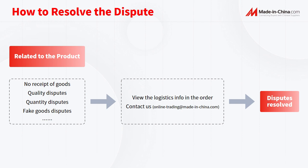If you haven't received your order, start by viewing the logistics info provided in the order. Reach out to the supplier to inquire about the delivery status — they should respond promptly. If not, remember you can always contact us for help.